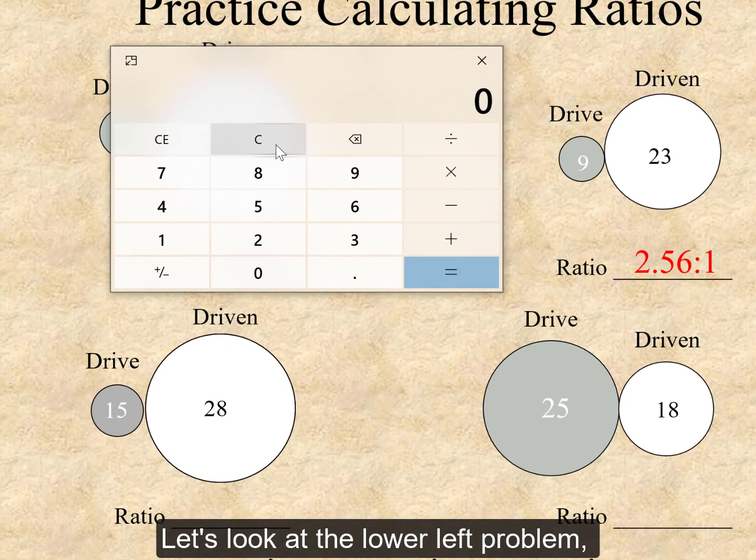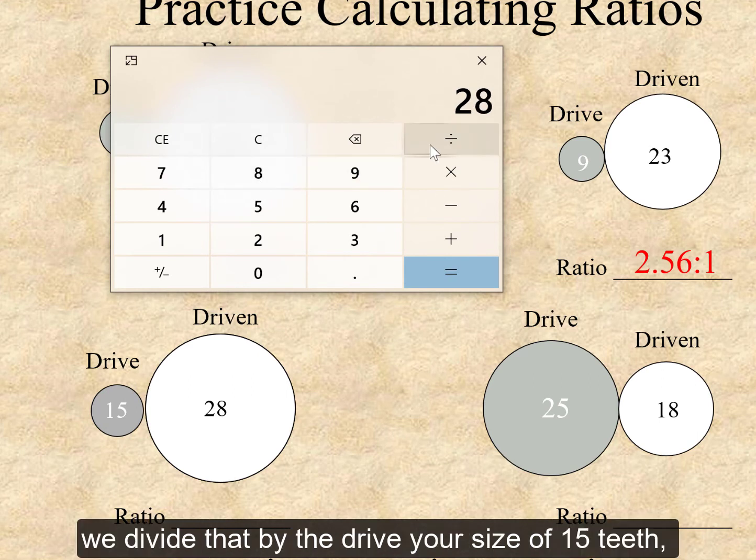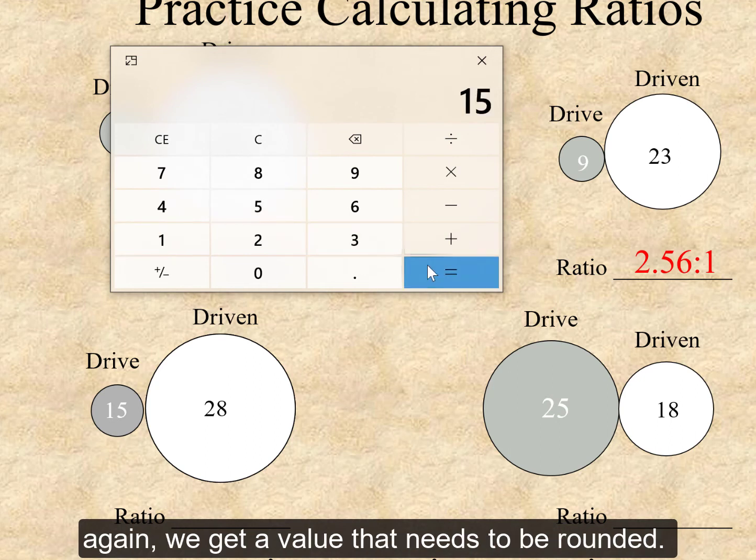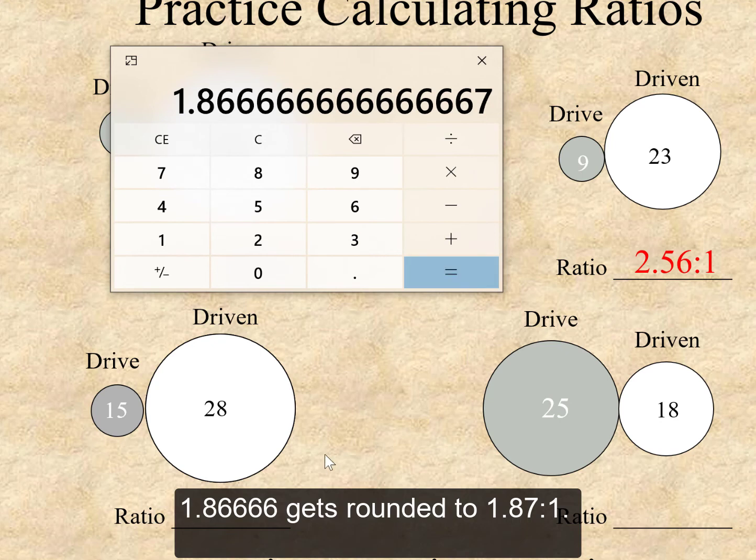Let's look at the lower left problem. The driven gear is 28 teeth. We divide that by the drive gear size of 15 teeth. Again, we get a value that needs to be rounded. 1.86666 gets rounded to 1.87 to 1.